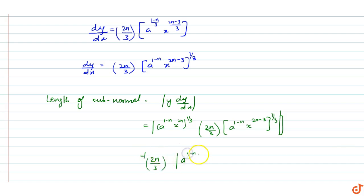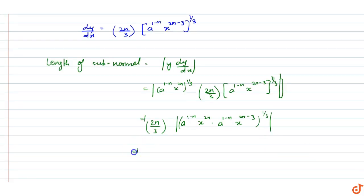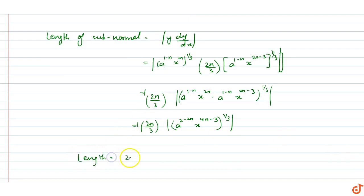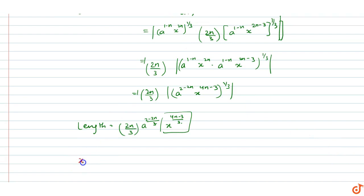This simplifies to (2n/3) · [a^(2(1−n)) · x^(2n) · x^(2n−3)]^(1/3), which is (2n/3) · [a^(2−2n) · x^(4n−3)]^(1/3). For the length to be constant, the x term must vanish, so x^((4n−3)/3) must equal 1.